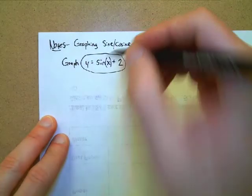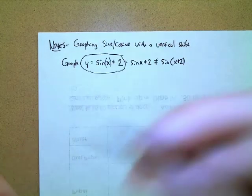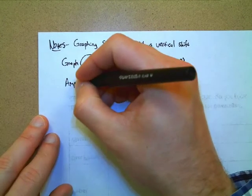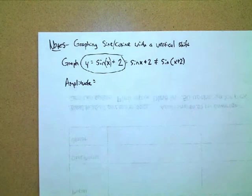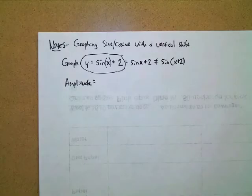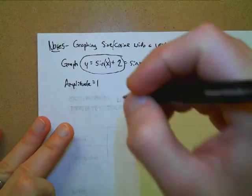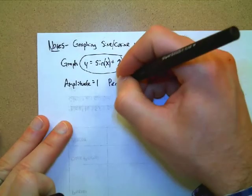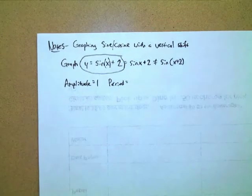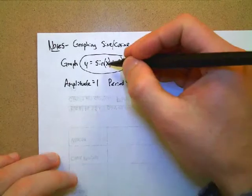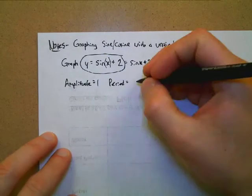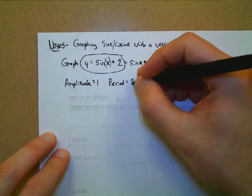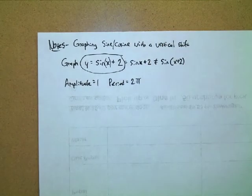With that being said, let's talk about the amplitude. According to my function, the amplitude of this graph is still one. What about the period — is the period transformed at all? There's nothing in with the x, so the period does not change. It's just the standard two pi. No transformations there.